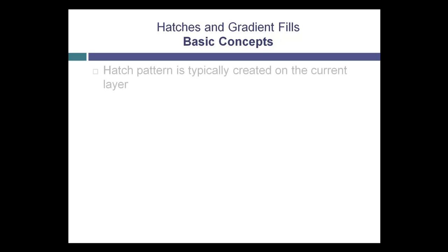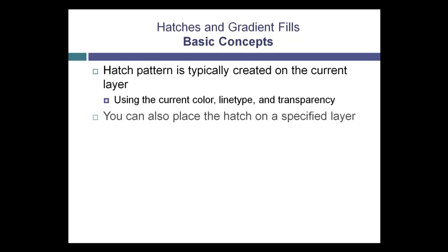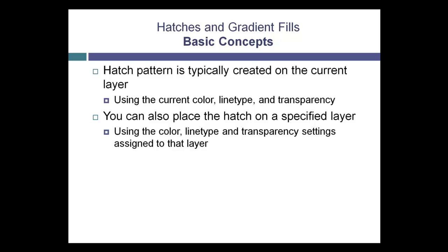When you apply a hatch, the hatch is typically created on the current layer, in which case its color, line type, and transparency are determined by the color, line type, and transparency of the current layer. You can also place the hatch on a specified layer using the color, line type, and transparency settings assigned to that layer.